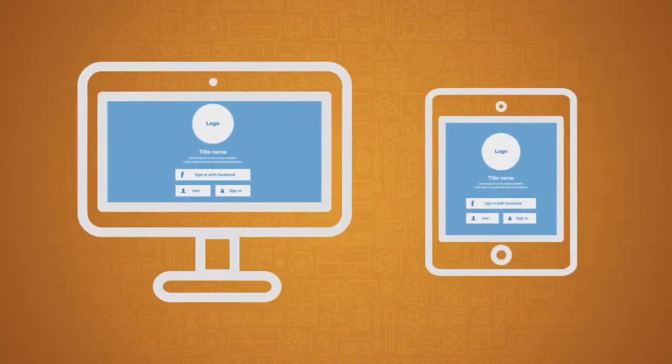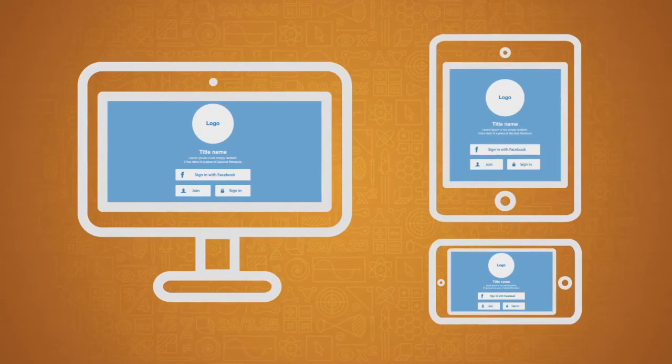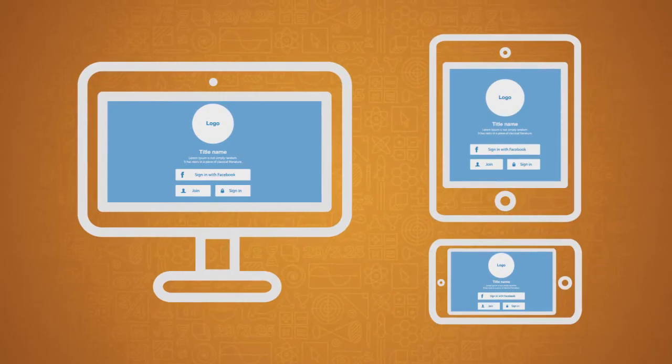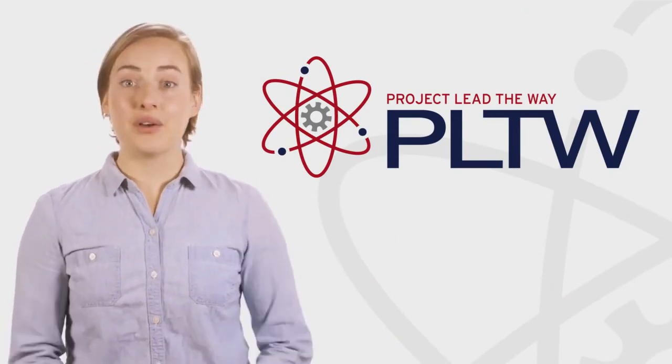Similar to our party planning example, computer scientists create linear algorithms to instruct computers and devices to perform various tasks in a certain order. Now that you've learned about algorithmic thinking, you're ready to get started with creating your own algorithms.